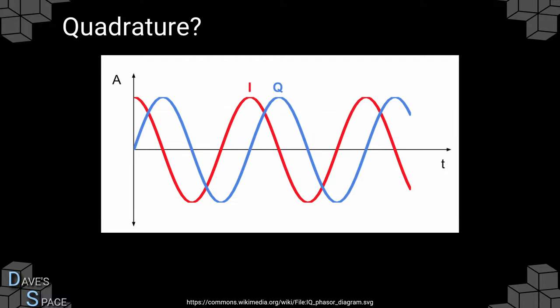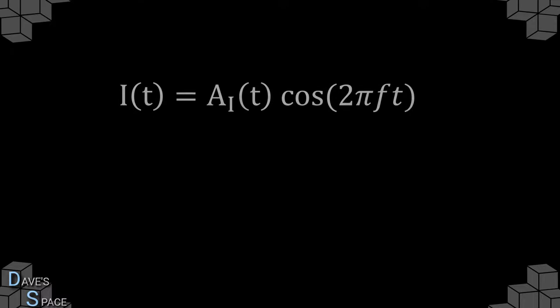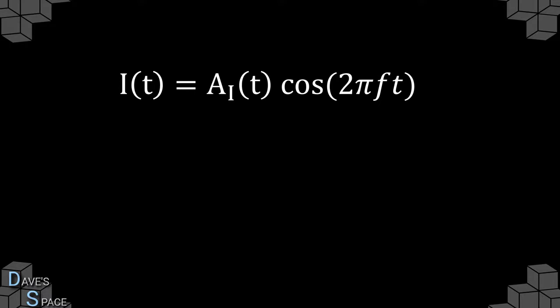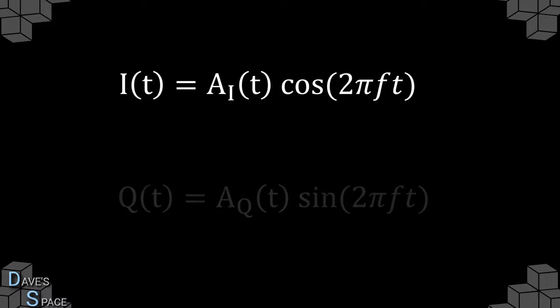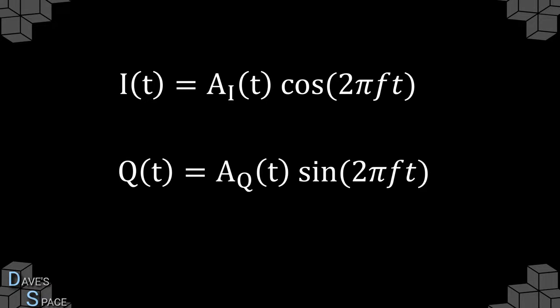This can be shown on a graph — you can see how the waves are the same but 90 degrees out of phase with each other. So what happens if we take an amplitude modulated signal, which here we'll call i(t), consisting of a modulation waveform A_i(t) multiplied by cosine of 2πft, where f is our carrier frequency? And what happens if we take another modulated waveform, q(t), with a different modulation waveform A_q(t), but now multiplied by sine of 2πft?